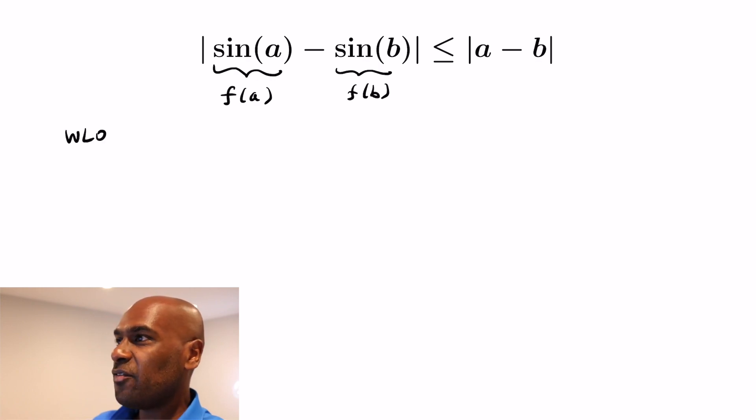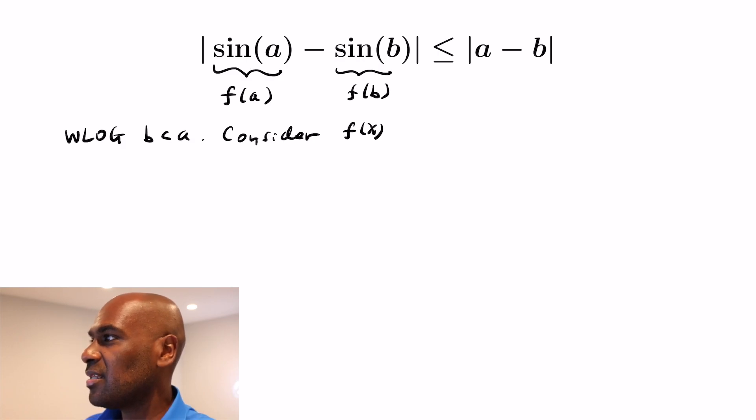So we're going to let f(a) be sin(a), f(b) be sin(b). So we have a function that we're applying a and b to. In general we're considering the function f(x) = sin(x) and without loss of generality we'll assume that b is less than a. You can switch either direction and you're fine. So this function on the closed interval [b,a] is continuous and on the open interval (b,a) is differentiable.